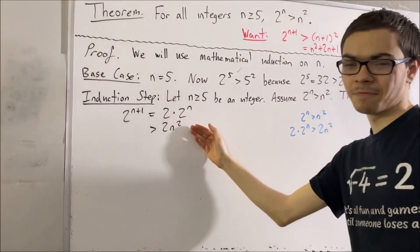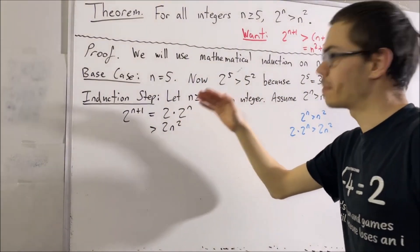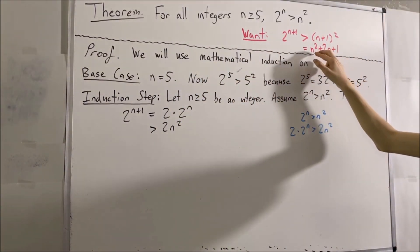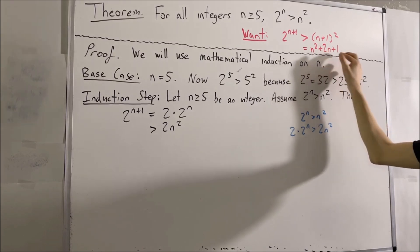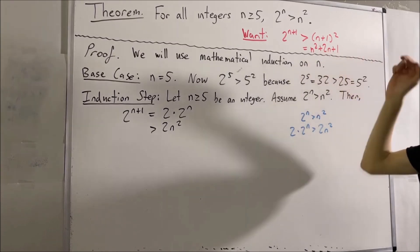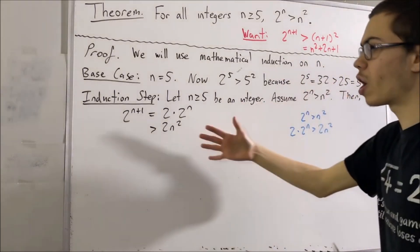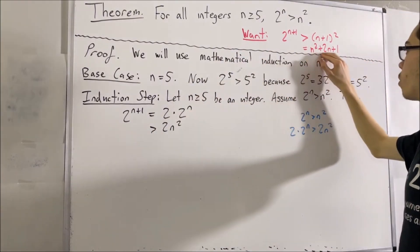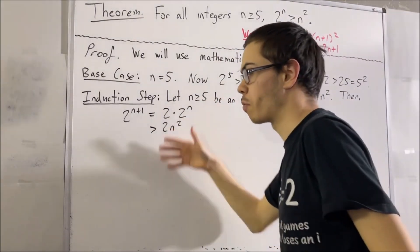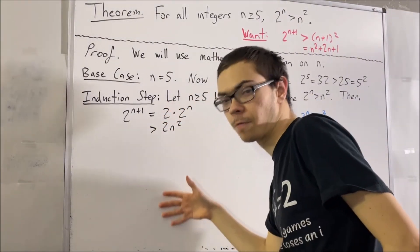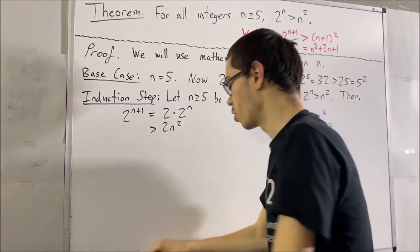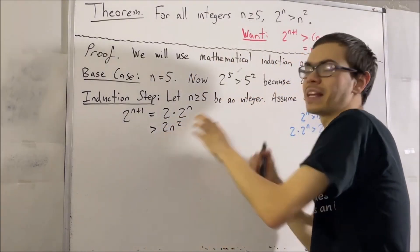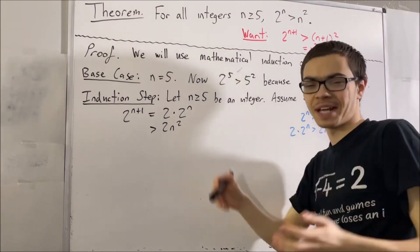So now we can write that 2 times 2 to the n is bigger than 2n squared. As I said before, it's going to be useful that we have n squared plus 2n plus 1. What we're going to try and do is bring n squared plus 2n plus 1 into our proof. To do that, we can first rewrite 2n squared as n squared plus n squared.